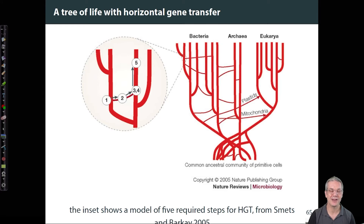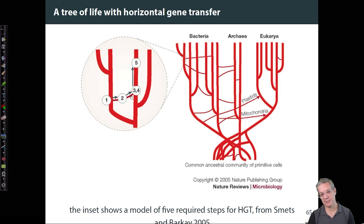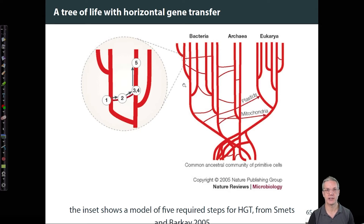And that's because a lot has to happen. We can consider five steps that really need to happen. But if you consider these five steps, it's actually more difficult as you go through them, and it's less likely to complete a horizontal gene transfer in multicellular organisms.